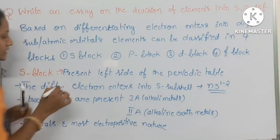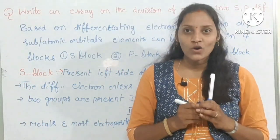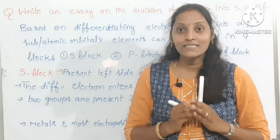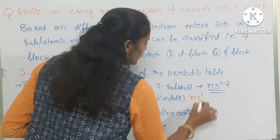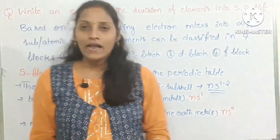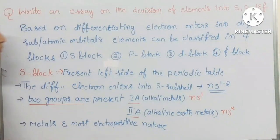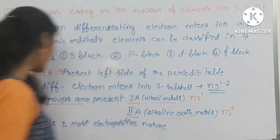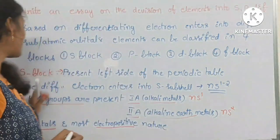To summarize s block: the differentiating electron enters into the s subshell or s orbital, and those elements come under s block. For Group 1 elements, the outer shell electronic configuration is ns¹; for Group 2, it is ns². Two groups are present — Group 1 (alkali metals) and Group 2 (alkaline earth metals) — and these are all mostly electropositive in nature and are metals.